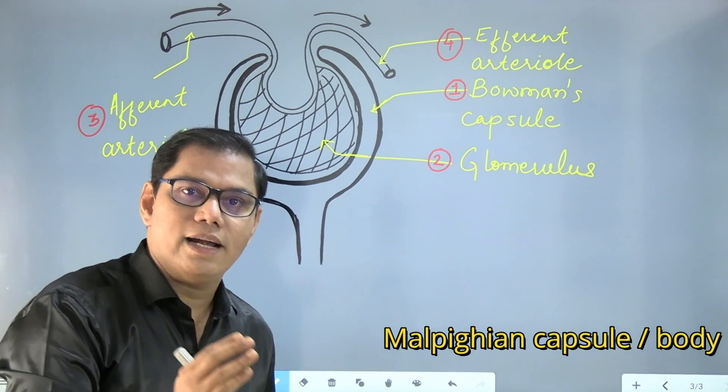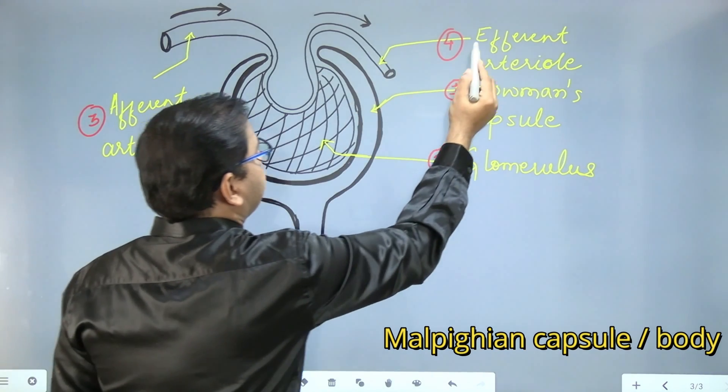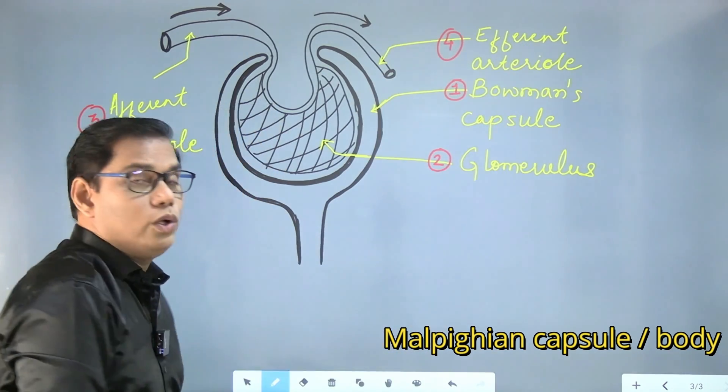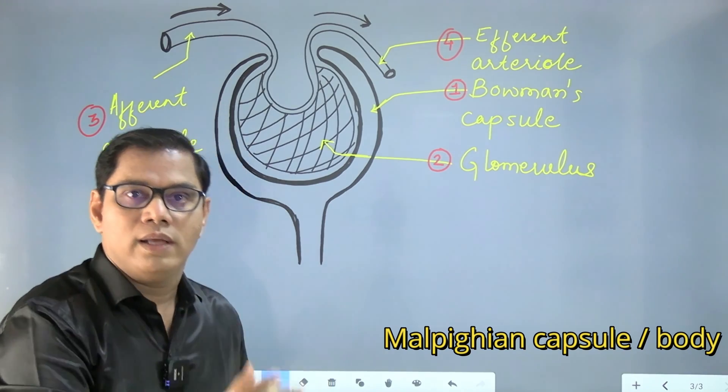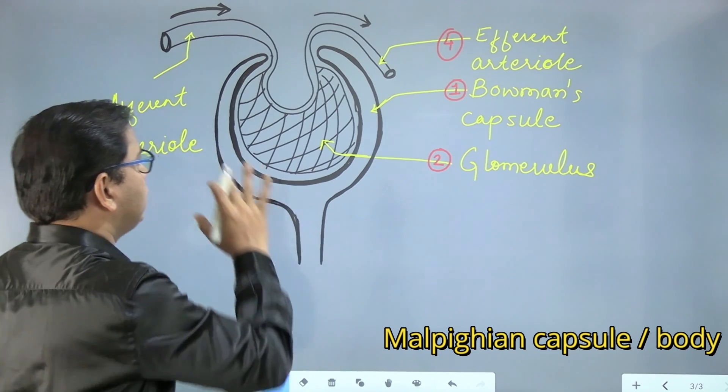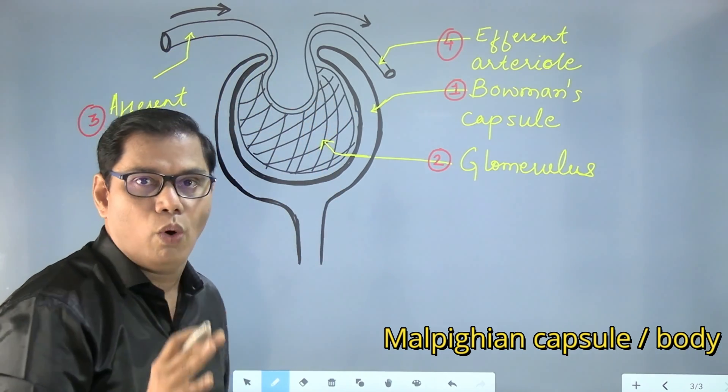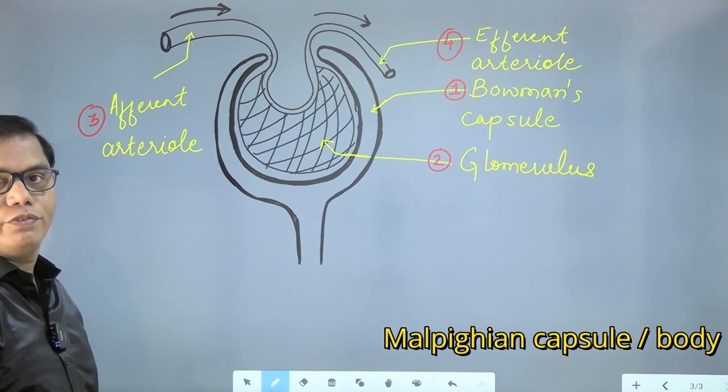If you don't show the diameter of the afferent arteriole bigger than the diameter of the efferent arteriole, you are not going to get any mark. Then your diagram is zero. That's what I said, that beauty of diagram is not important. Showing all the parts properly is more important. So here you have Malpighian body in front of you.